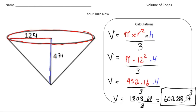Welcome back — let's go over the practice problem. I color-coordinated the important parts of the formula. The red part is the base of the cone: pi times radius squared. The height is 4 feet. When I do pi times 12 squared times 4, I get 1808.64. Dividing that by 3 gives a final answer of 602.88 cubic feet.